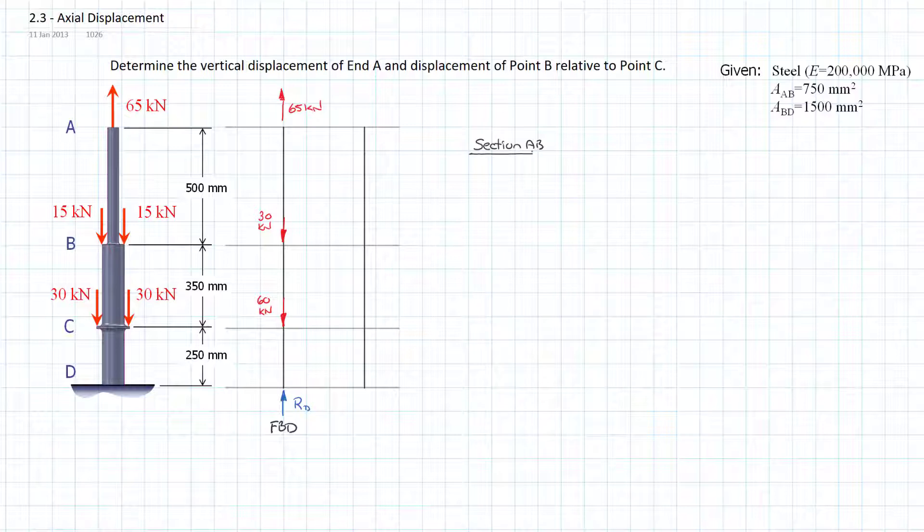I will draw its partial free body diagram. We're all going to look somewhat the same. It will have 65 kilonewtons on it there. Now we're cutting it somewhere between A and B so there's no other externally applied forces. Then we're going to have an internal force, axial force, and we can just call that P_AB.